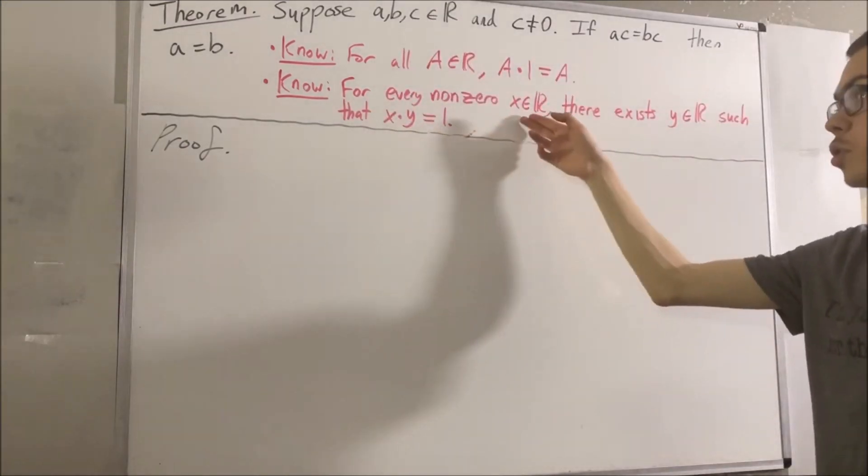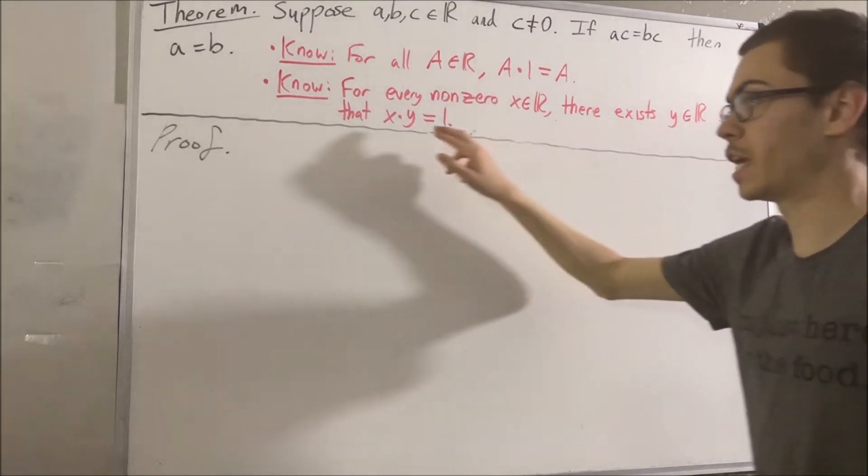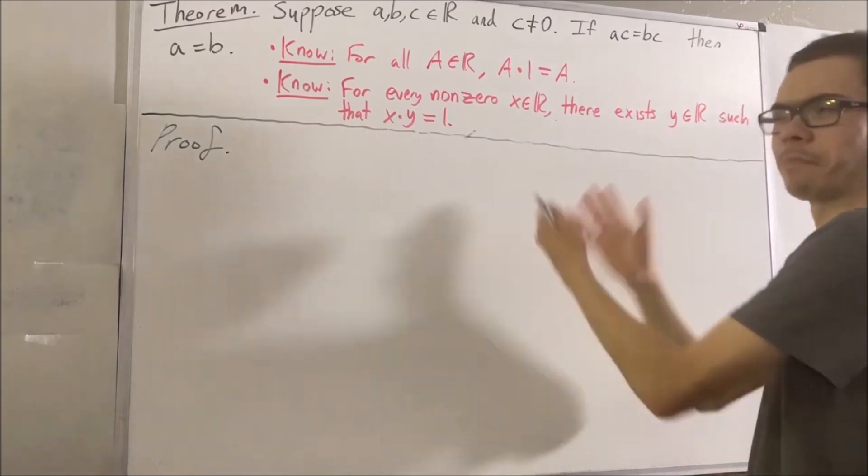So for every non-zero real number X, there exists a real number where if you take X and multiply it by that number, you get 1. That's the idea.